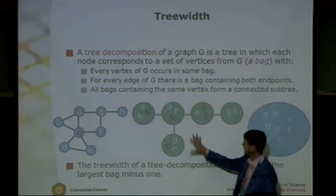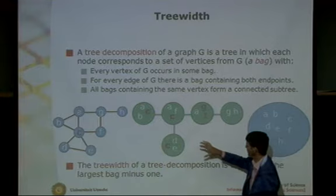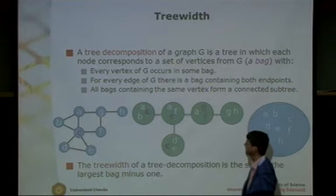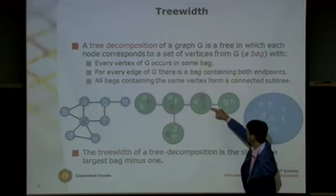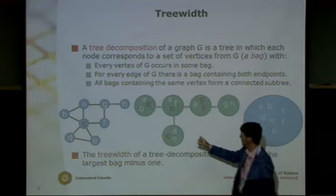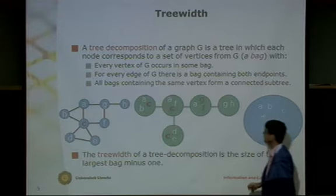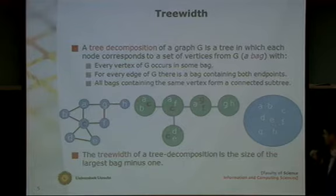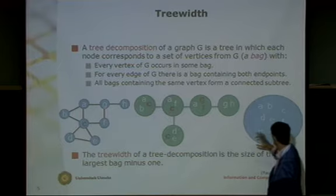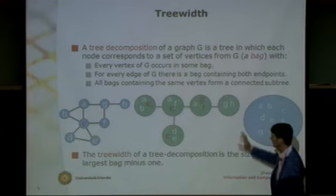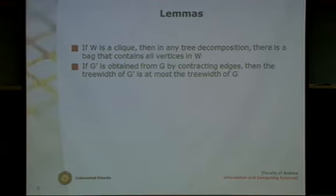A tree decomposition of a graph consists mainly of a tree, and for every node of the tree there is a set of vertices — called a bag — associated to that node. There are three conditions: every vertex should belong to a bag; for every edge there must be a bag containing both endpoints; and for every vertex, all the bags containing that vertex must be consecutive, forming a subtree of the tree. The tree width of a tree decomposition is the size of the largest bag minus one. You always have a trivial tree decomposition of just one bag with all vertices, but you prefer small tree width because then your algorithm is faster.